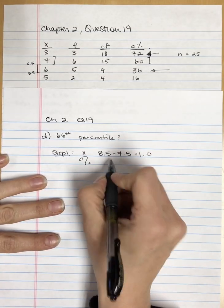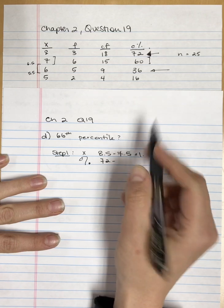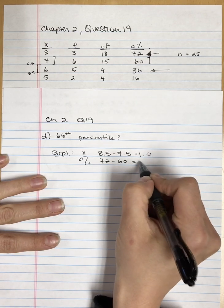I take the top, 72, and minus the bottom, which is 60, and I get 12.